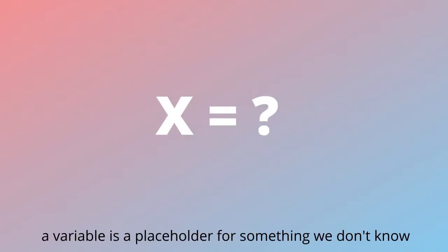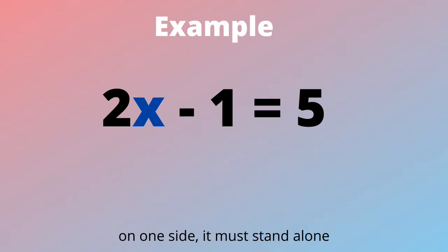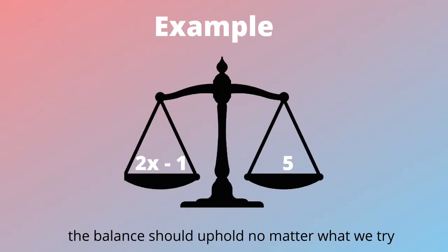A variable is a placeholder for something we don't know. To find what that is equal to, on one side it should stand alone. The balance should uphold, no matter what we try.